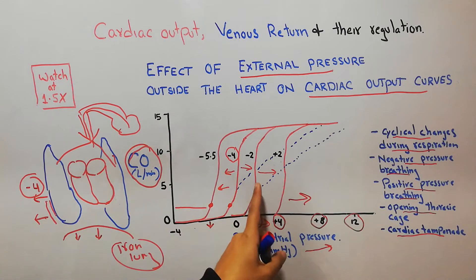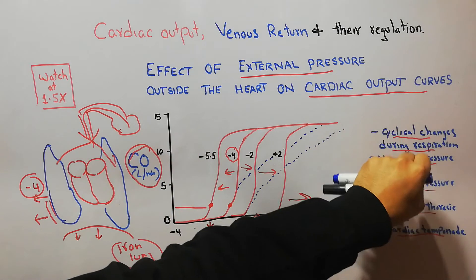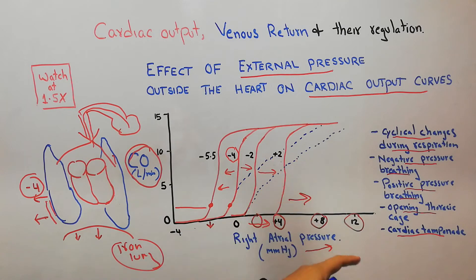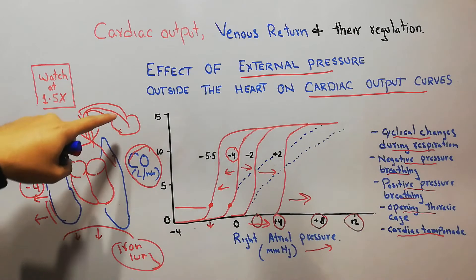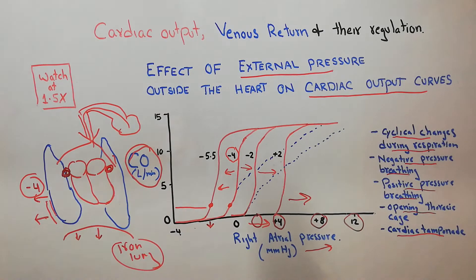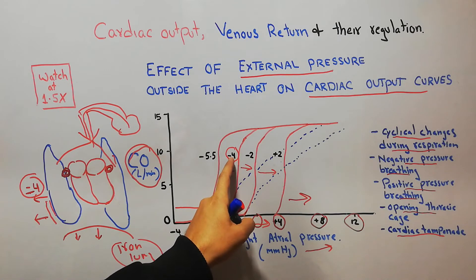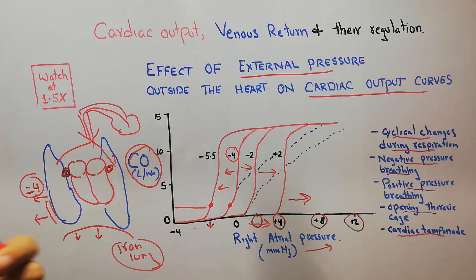The conditions which shift this curve towards the left side include normal cyclical respiration and negative pressure breathing using an iron lung. The conditions which shift the curve towards the right side and increase the intrapleural pressure include positive pressure breathing, which pumps air into the lungs and increases the pressure outside the heart. Similarly, opening the thoracic cage decreases this negative pressure, shifting it from minus 4 towards minus 2, plus 2, plus 8, or whatever level it may reach.